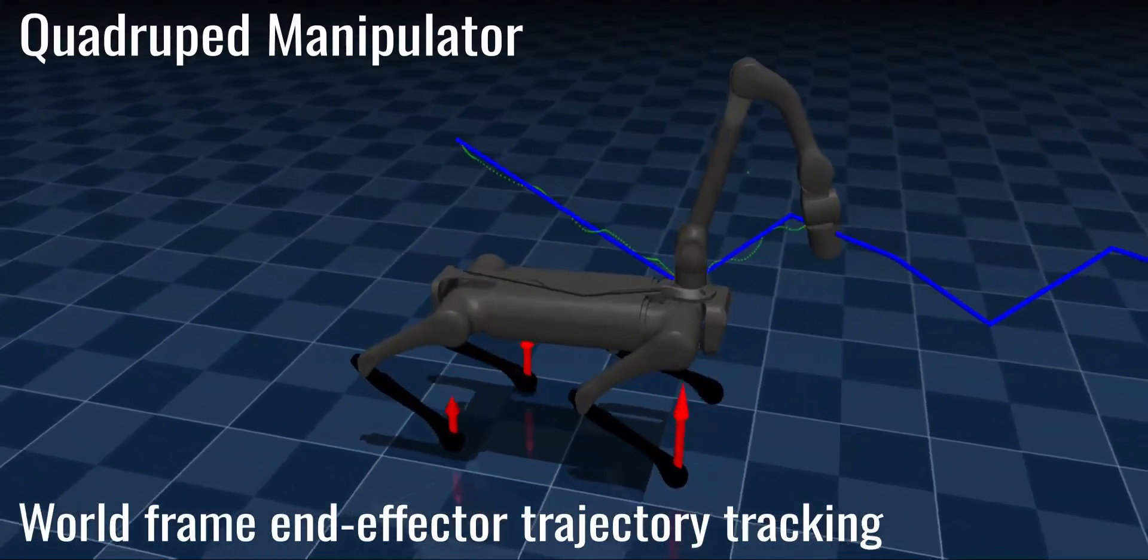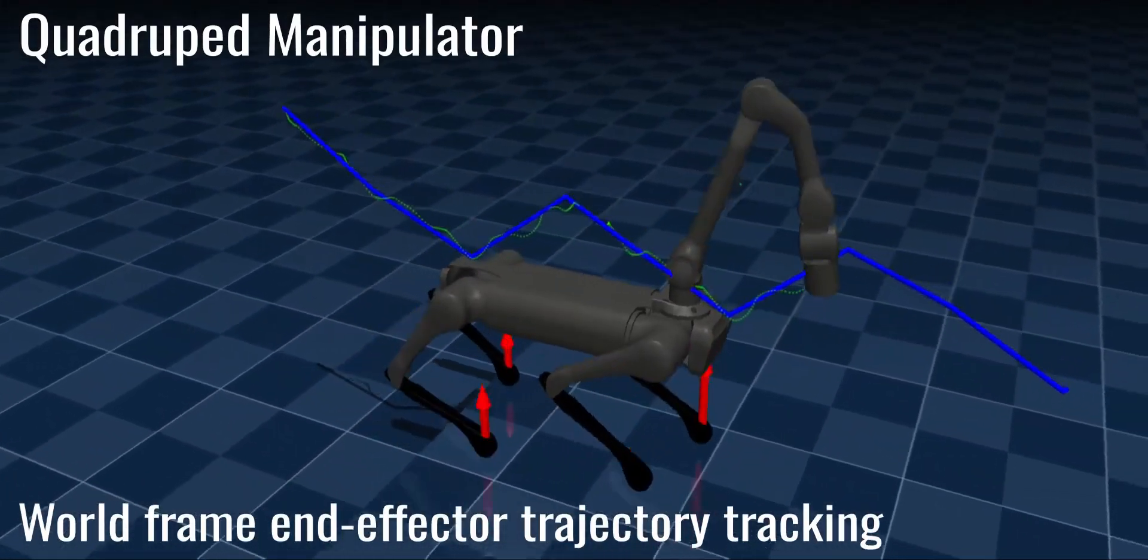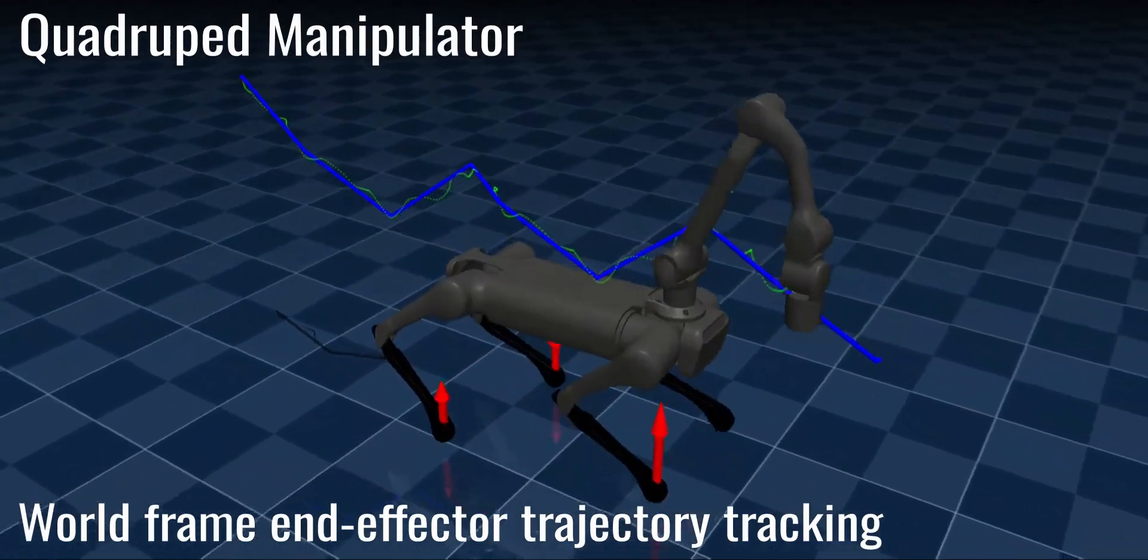To show the whole body coordination, we made the robot track a reference trajectory at the end effector, defined in world frame.